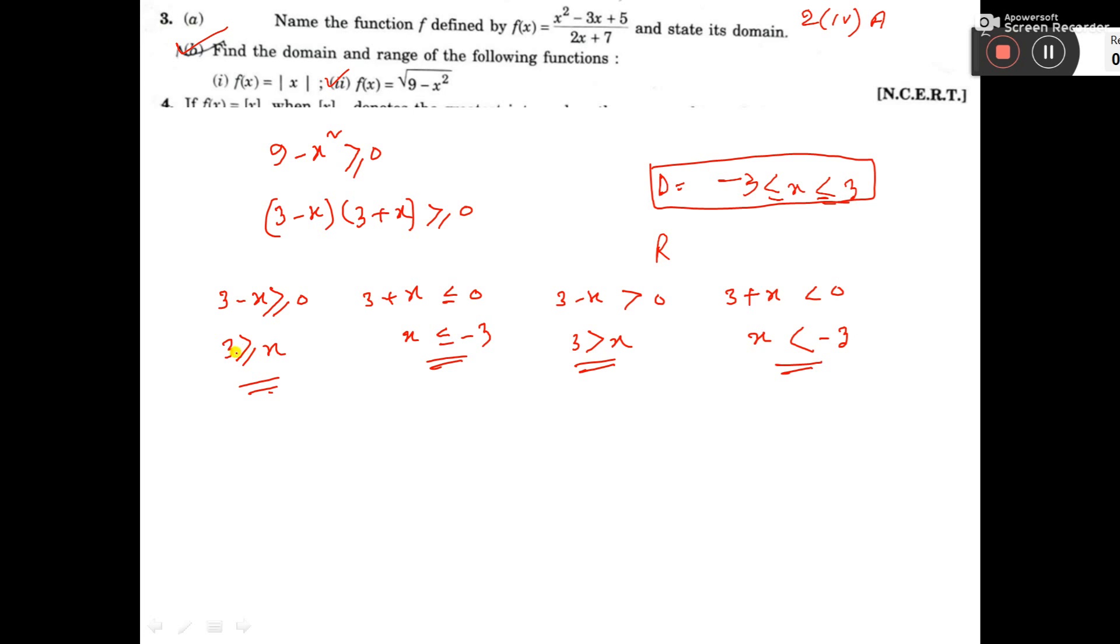Here, 3 greater equal to x. That means value of x less than 3 or less than equal to 3. So let us take one value 2. If we put here 2, then 2 to the power 0 is 4. So 9 minus 4, that is 5. So 5 is greater or equal to 0. So this value is correct. So this condition is correct.